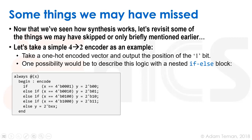We can write always at x, begin, encode — that's just the name of the block. If x equals 0001, then we'll output 0 for the 0 position of the 1. If it equals 0010, we'll output the 1 position. 0100 gives the 2 position, and 1000 gives the 3 position. If not, we'll propagate an x.